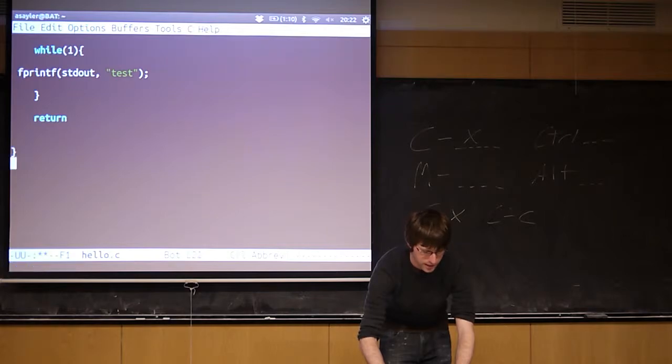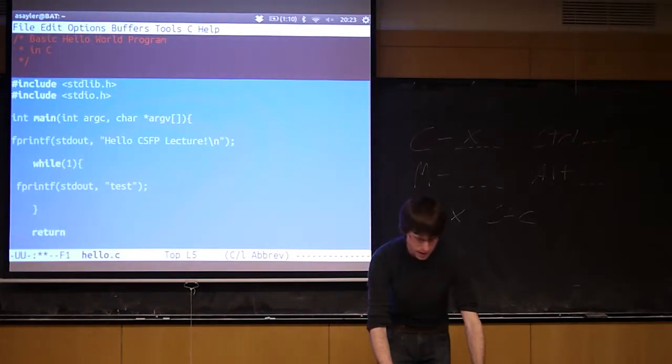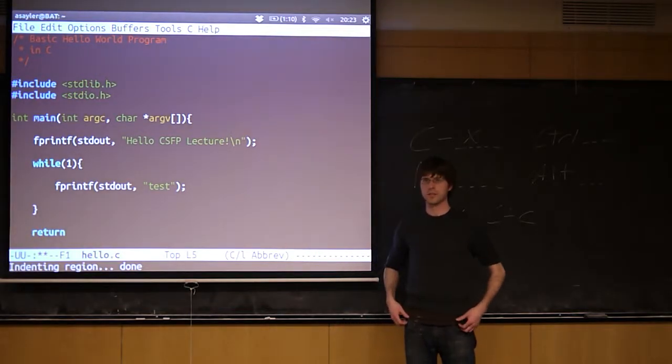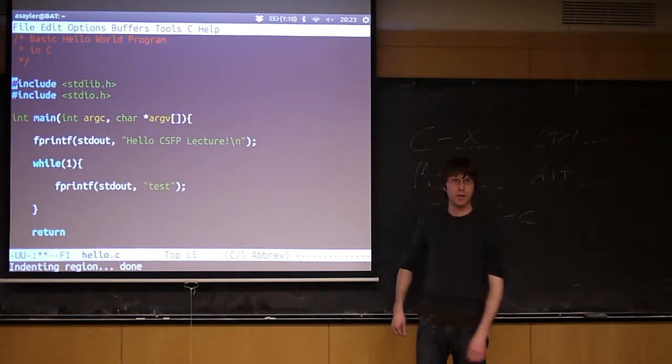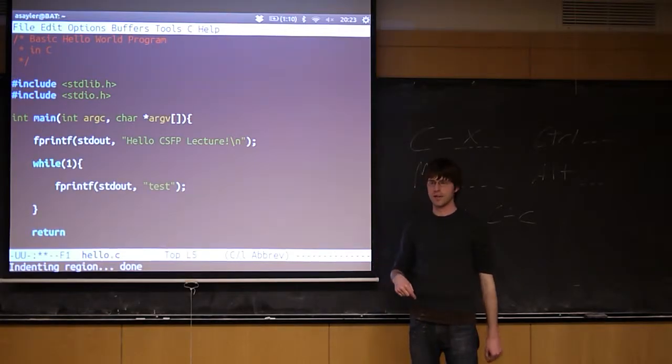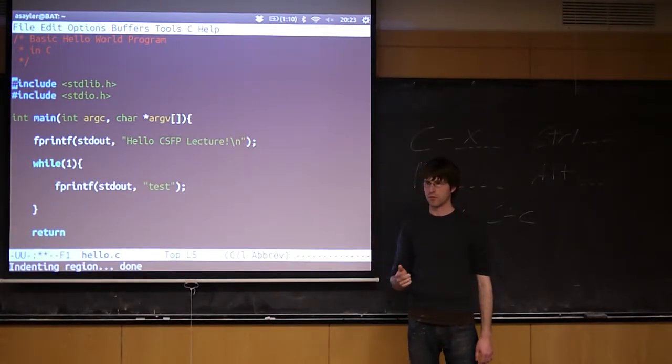You can actually select the whole thing. So I'm going to do a control space like we did before. I'm going to start going up to select everything. And with it all selected, if I just hit tab, it's going to re-space everything to where it thinks it should be based upon the current language mode. So I could have gone through every line and hit tab and it would have fixed each line individually, or I can highlight an entire section, hit tab, and it should fix everything in this section.